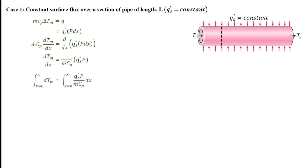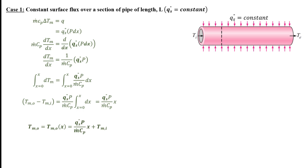Multiplying each side by dx and integrating, we get the left-hand side in terms of the outlet and inlet mean temperatures. On the right-hand side, the heat flux, perimeter, mass flow rate, and specific heat are all constant, so integrating from 0 to some location x just gives us x. Rearranging and solving for the outlet mean temperature, which depends on the length of that section of the pipe, we see that the change in mean temperature is linearly dependent on x.